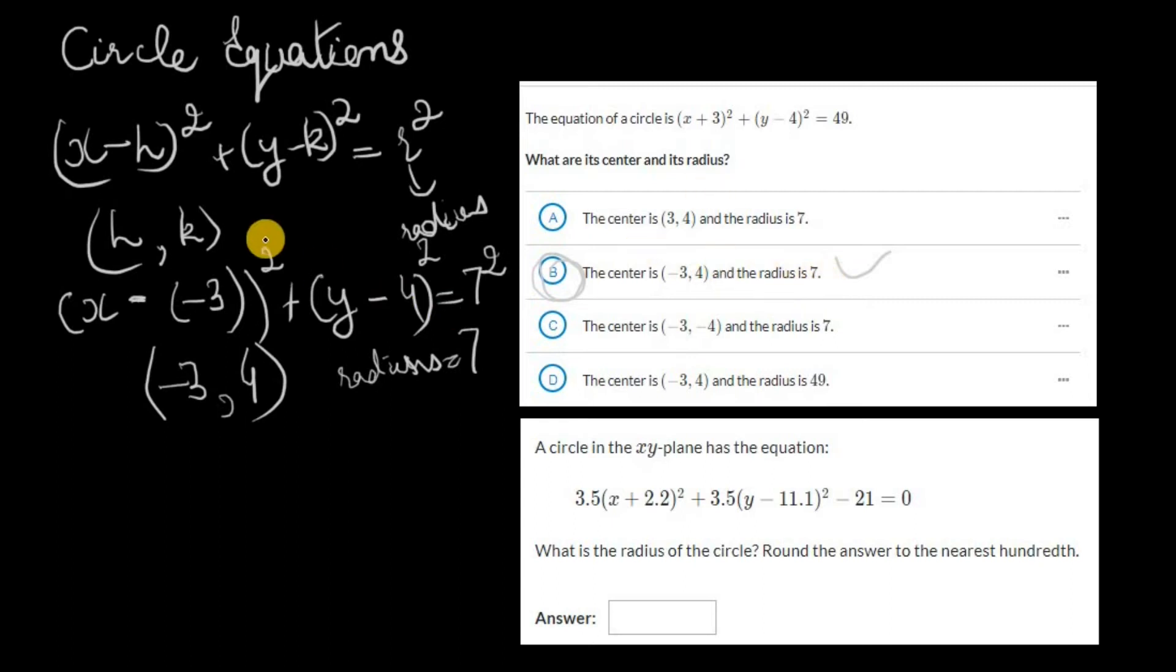Now in the actual test, I wouldn't recommend writing anything down for this question. Simply in your head, you're going to flip the signs of whatever number is being added onto x and y. So in my head, I would see a +3, flip the sign, that would be -3, and that would automatically eliminate A and D. Then I'd do the same for y and eliminate C because that's -4, and when I flip this negative it gives me +4. So this is going to be B.